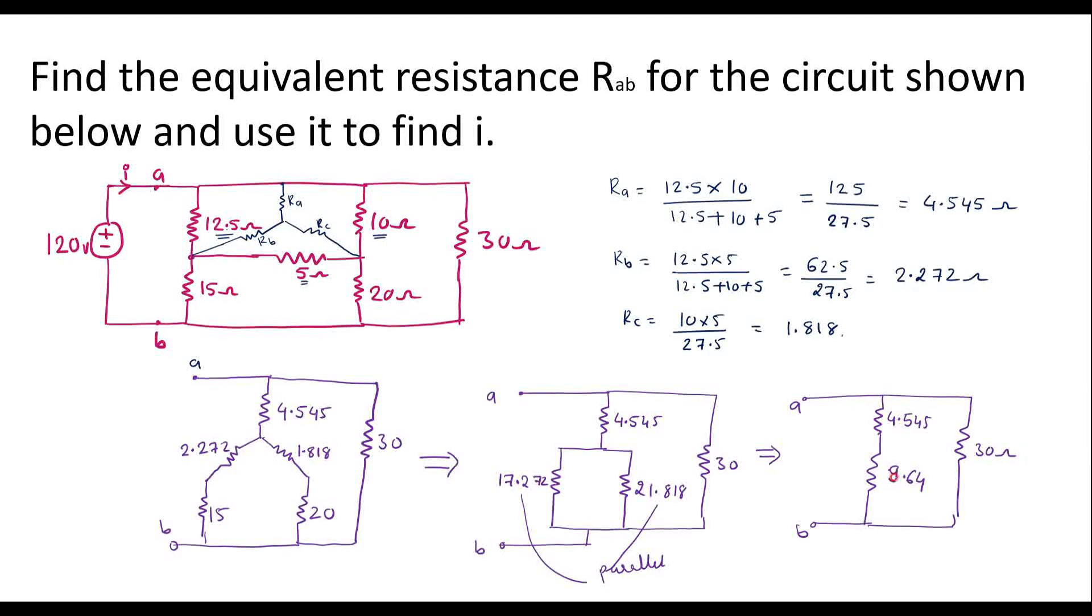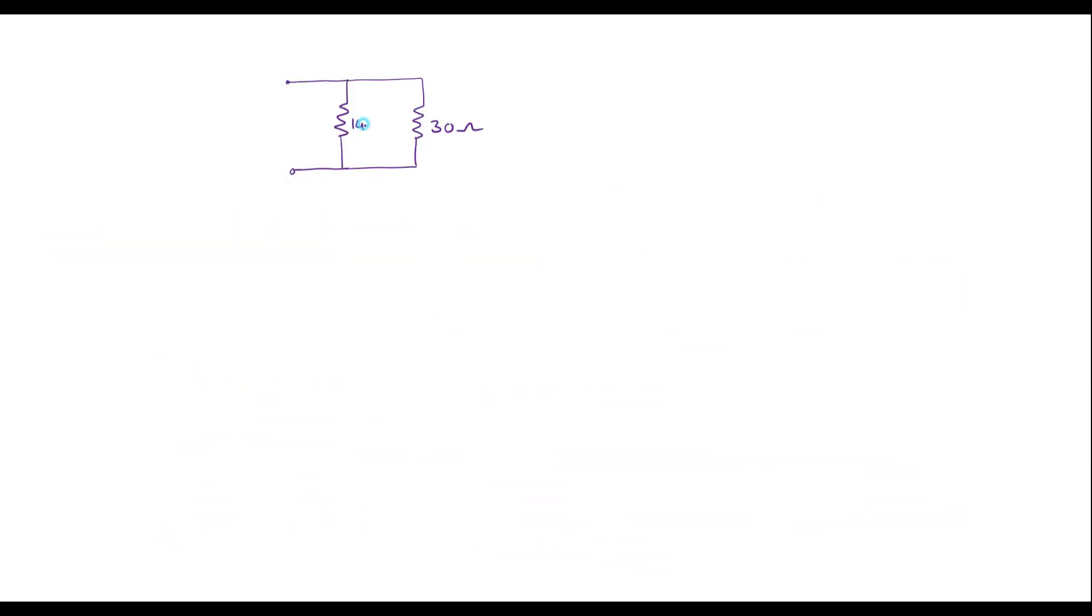Here we can see that these two resistors are in series, that combination will be in parallel with this, which is 14.185 ohm. So now, therefore, RAB is equal to 14.185 into 30 divided by 44.185, that is 9.63 ohm.